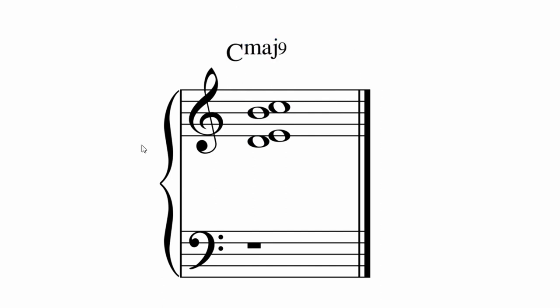Here's an interesting take on a C major nine. We've got four horns in pairs voiced closely. Here we've got the ninth and third, and then the seventh and root.